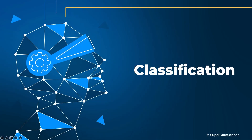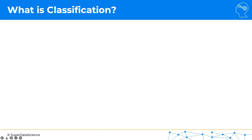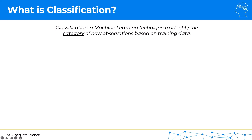Hello and welcome to this new section on classification. Classification can be defined as a machine learning technique to identify the category of new observations based on training data. This is different to regression, where we had to predict a continuous number — here we use classification to predict a category. It is a type of supervised learning algorithm, which we'll discuss more when we reach the next section on clustering.